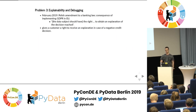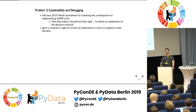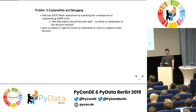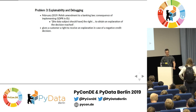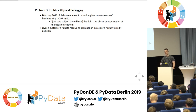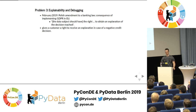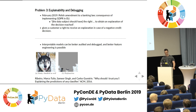The third problem is one of explainability and, related to that, model debugging. The Polish government recently published an amendment to a banking law as a consequence of the GDPR. Quoting the GDPR: the data subject should have the right to obtain an explanation of the decision reached. So if a customer applies for a loan and the model says he's not credit worthy, that customer now has a right to receive an explanation. You need to understand your model and show your customer why that decision was made.